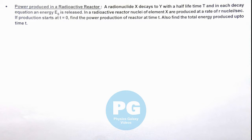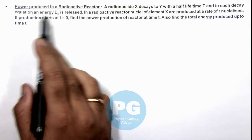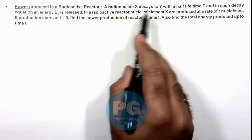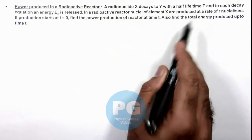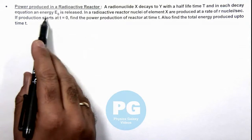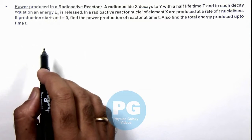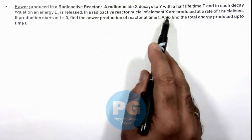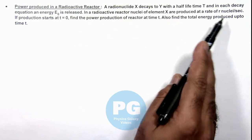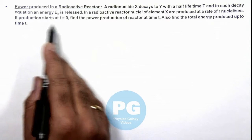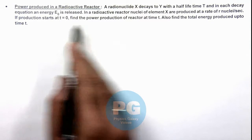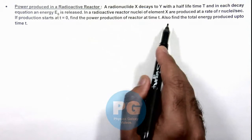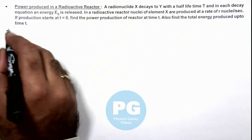In this illustration, we'll discuss about the power produced in a radioactive reactor. We are given that a radionuclide X decays to Y with a half-life time T, and in each decay an energy E₀ is released. We are given that nuclei of element X are produced at a rate of R nuclei per second. If production starts at t equal to zero, we are required to find the power production of the reactor at time t, and also the total energy produced up to time t.